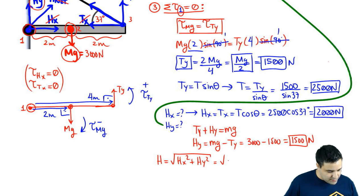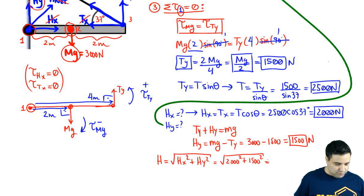So now I can combine to find H. H will be the square root of Hx squared plus Hy squared. And if I do this, I get Hy is 1,500, Hx is 2,000, Hy is 1,500. And if you combine this, you get 2,500 Newtons.